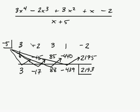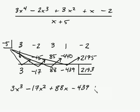So your new answer is going to be 1 degree less than your original polynomial. So if you have a 3x to the 4th here, this coefficient goes in front of an x cubed. So your new answer is going to be 3x cubed minus 17x squared plus 88x minus 439, and this is going to be plus 2193 all over your divisor, which is x plus 5.